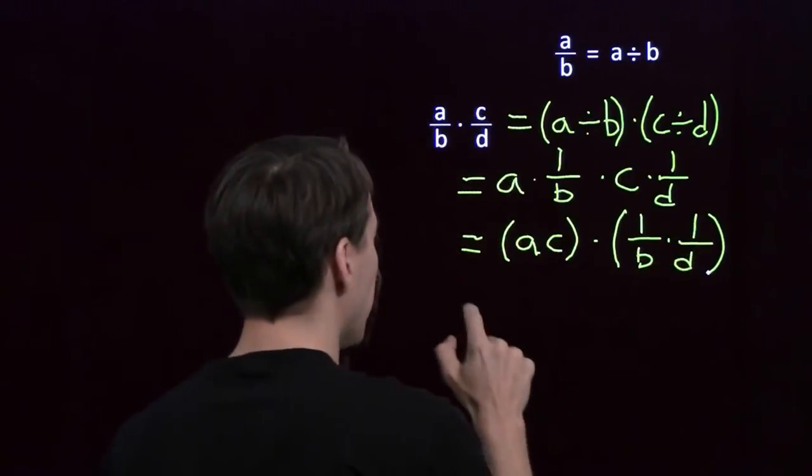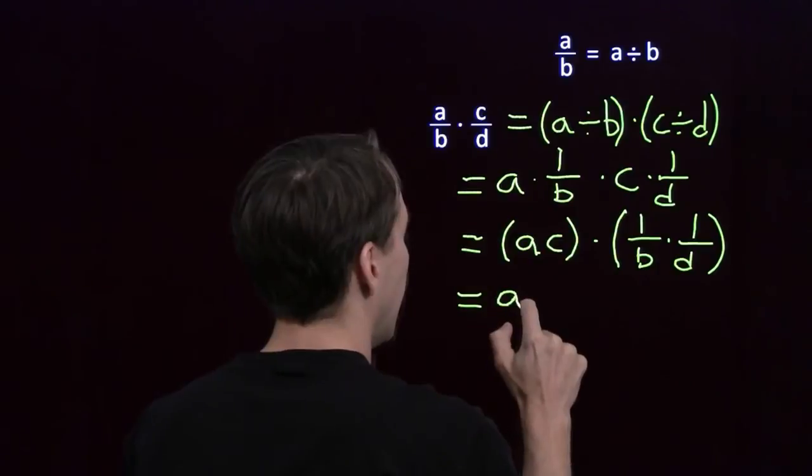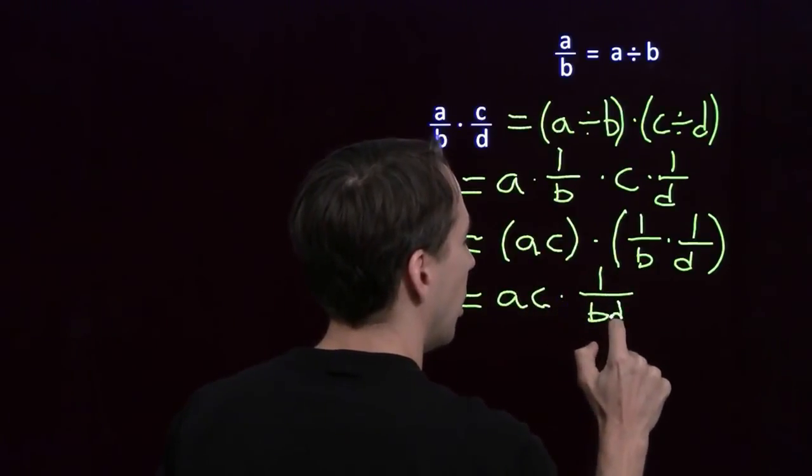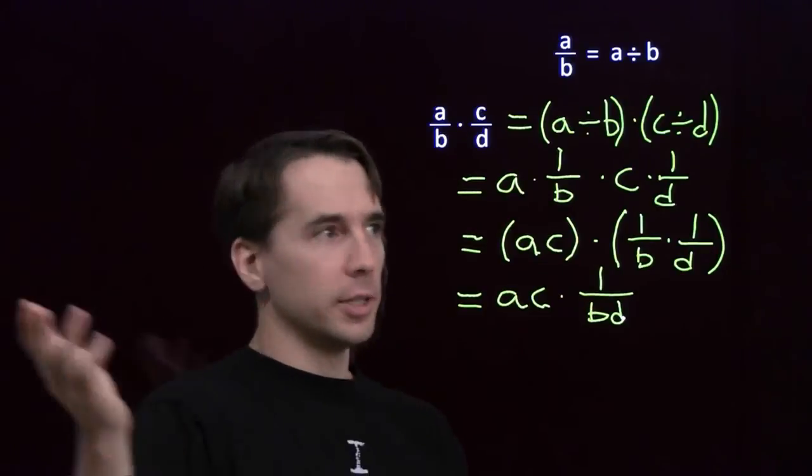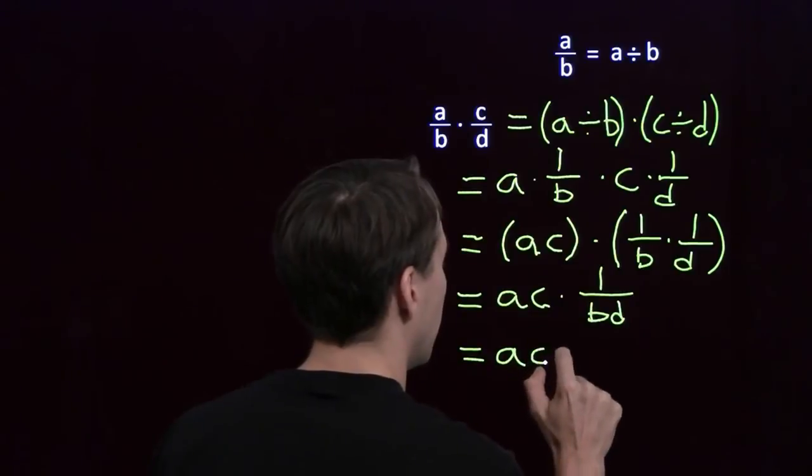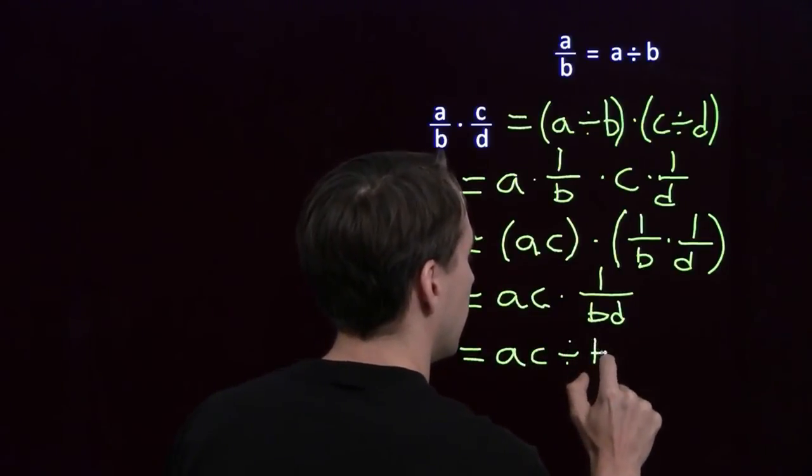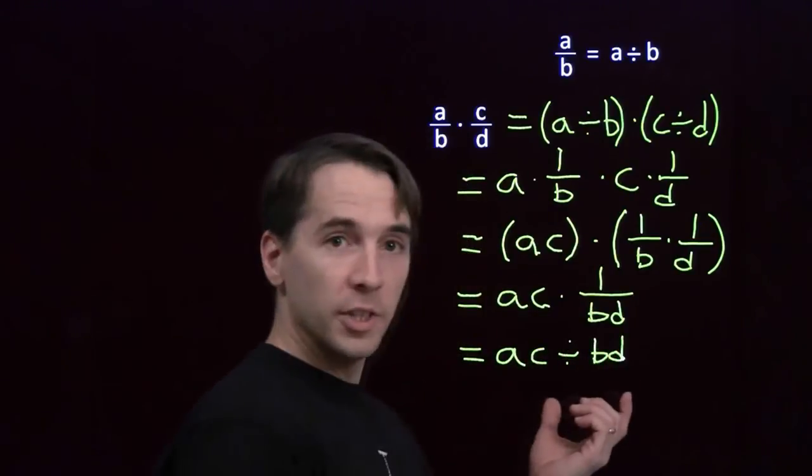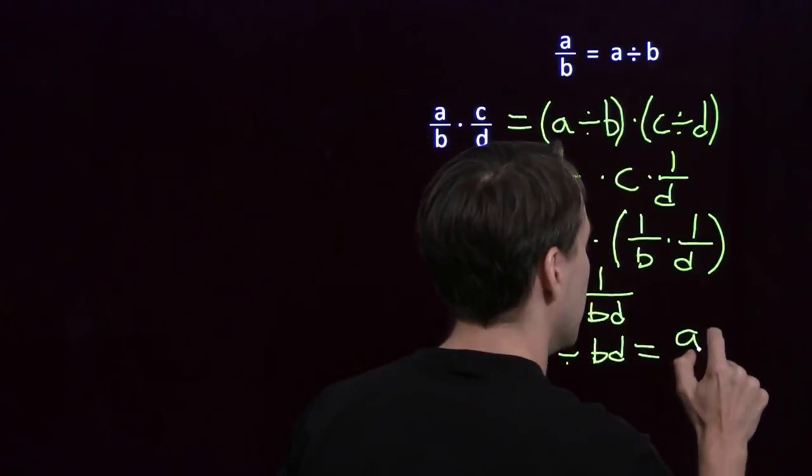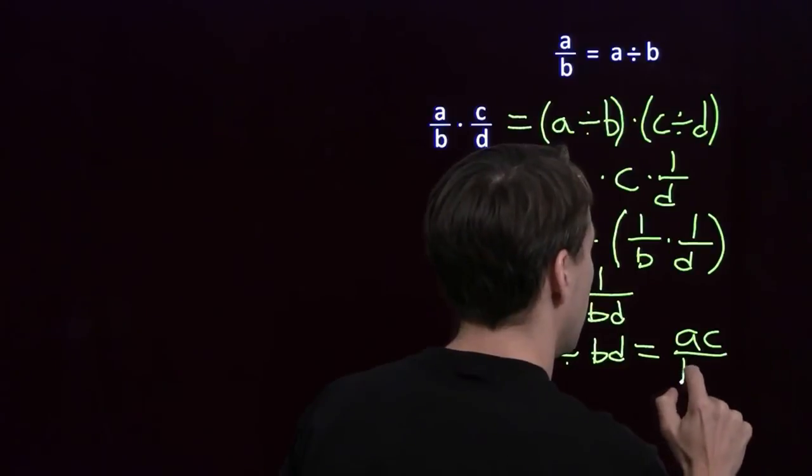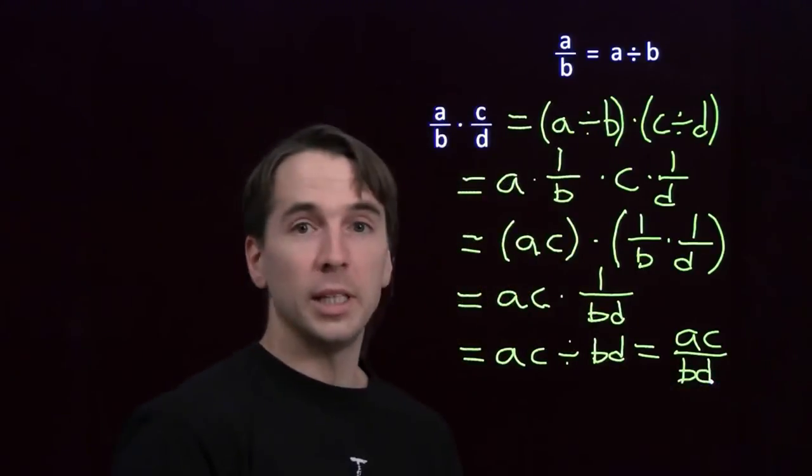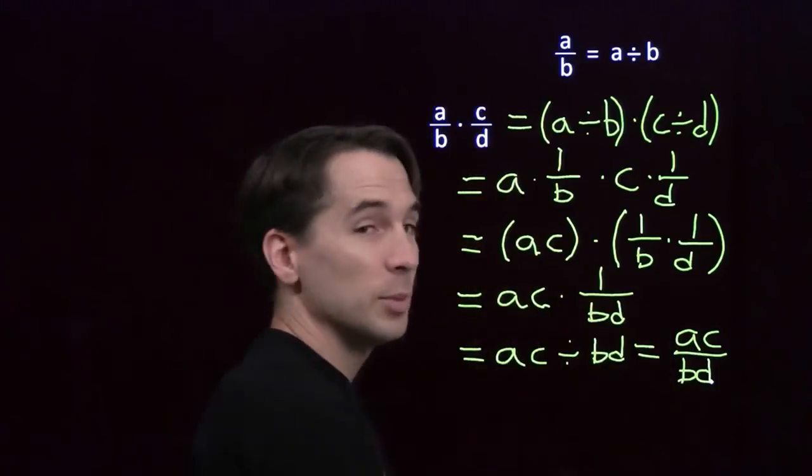We know how to multiply these reciprocals. And we get A, C times the reciprocal of B, D. Multiplying by reciprocal. You've heard this a couple times already. That's just division. And what's a division? Division is a fraction. A, C divided by B, D is just A, C over B, D. A times C over B times D.